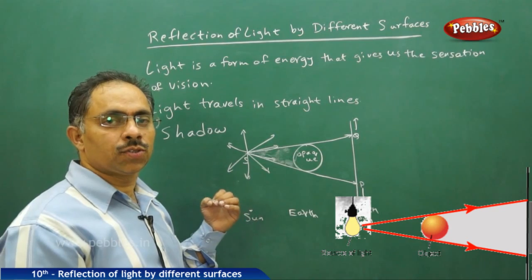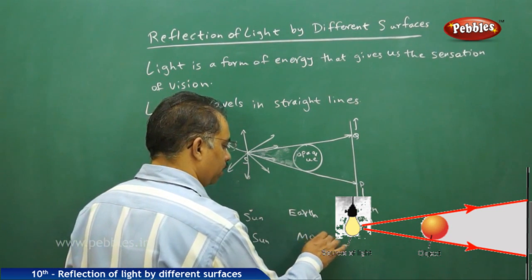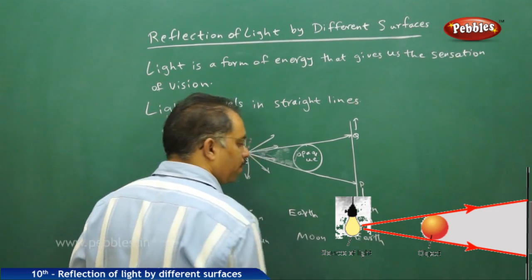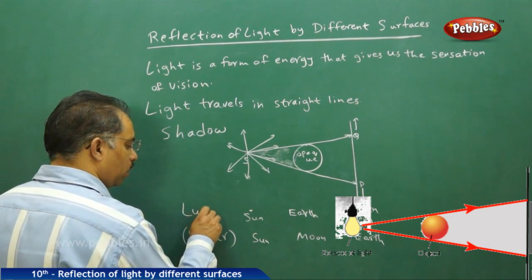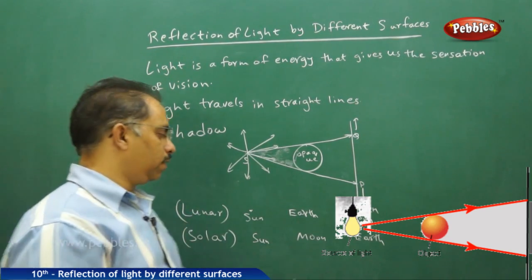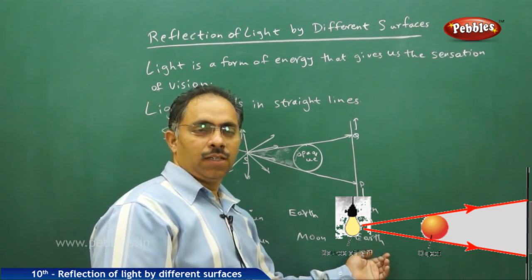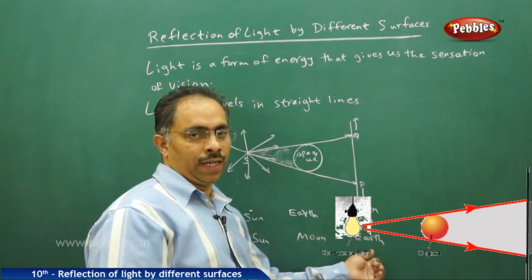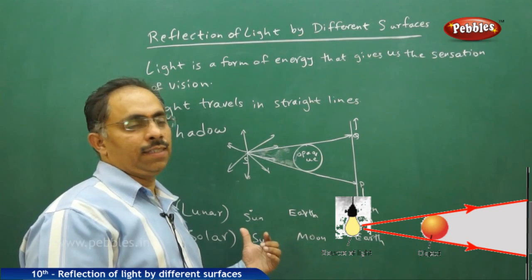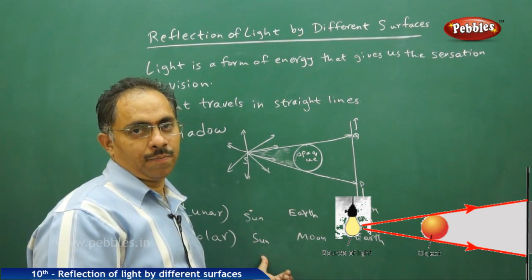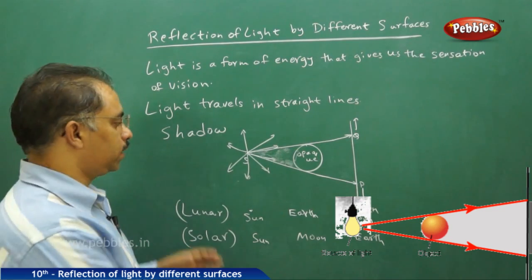On the other hand, you have the solar eclipse. For the solar eclipse, still the sun is the source of energy, but the moon comes in the path of light between the sun and the earth. The shadow of the moon is observed on the earth, and people who are falling under the shadow of the moon on the earth will not be able to see the sun — that is what you call a solar eclipse. It is this rectilinear propagation of light, or light traveling in straight lines, which is causing this phenomenon.